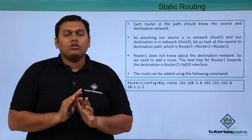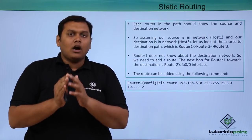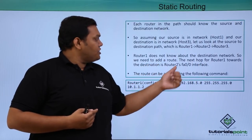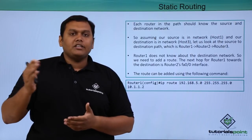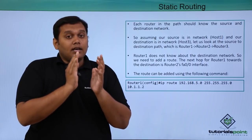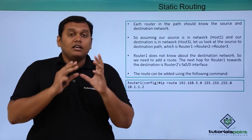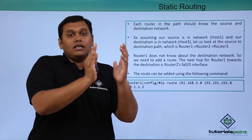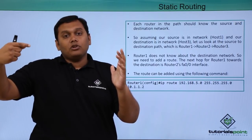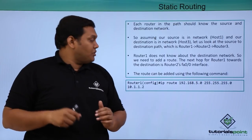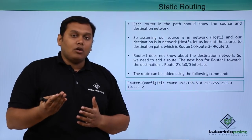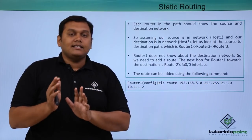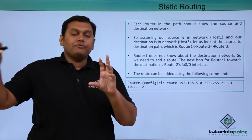Router 1 does not know about the destination network, so we need to add a route manually. The next hop for Router 1 towards the destination is Router 2's fa0/0 interface. We add a manual route in global configuration mode using: IP route [destination IP] [wildcard mask] [exit interface], so Router 1 will pass the packet to Router 2 through Router 2's fa0/0 interface.